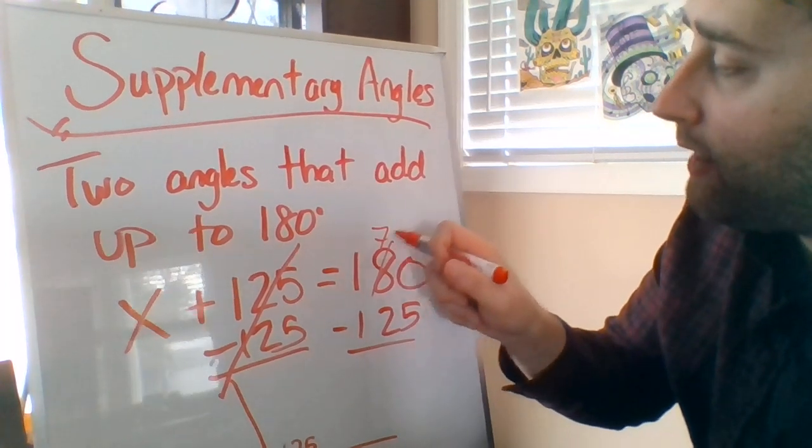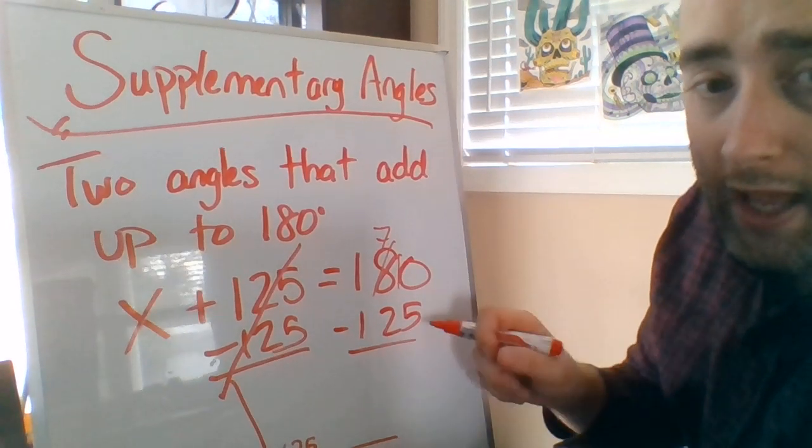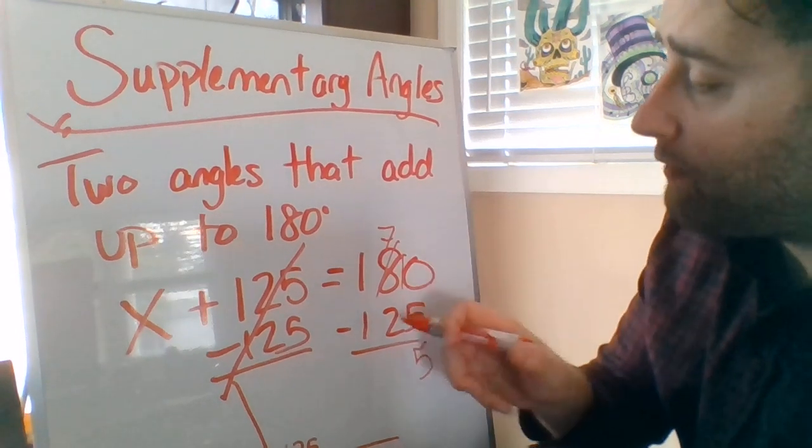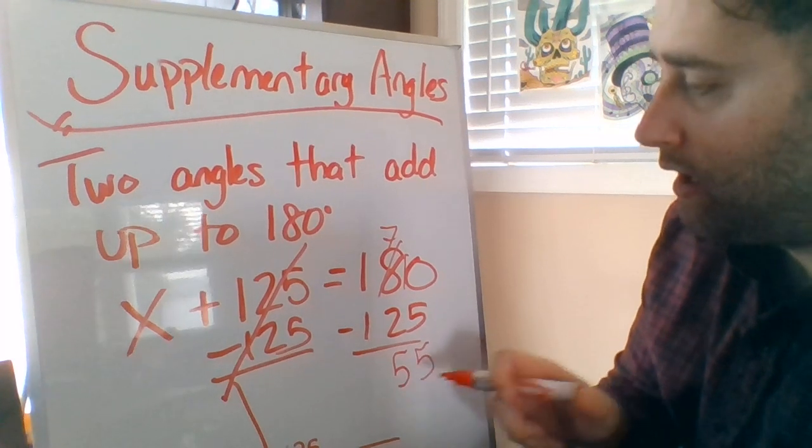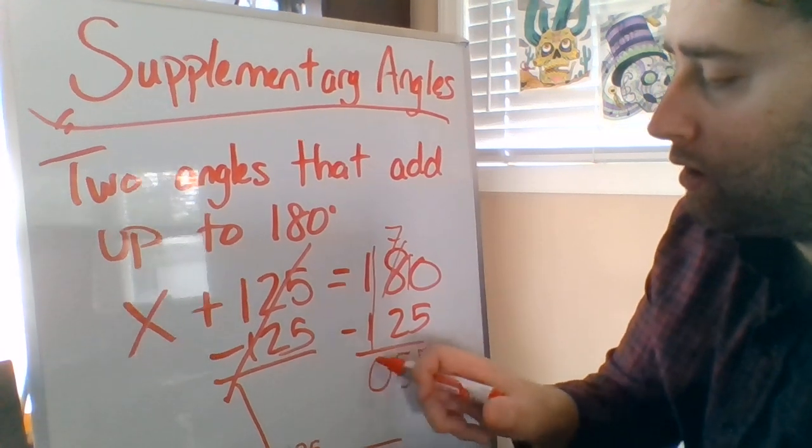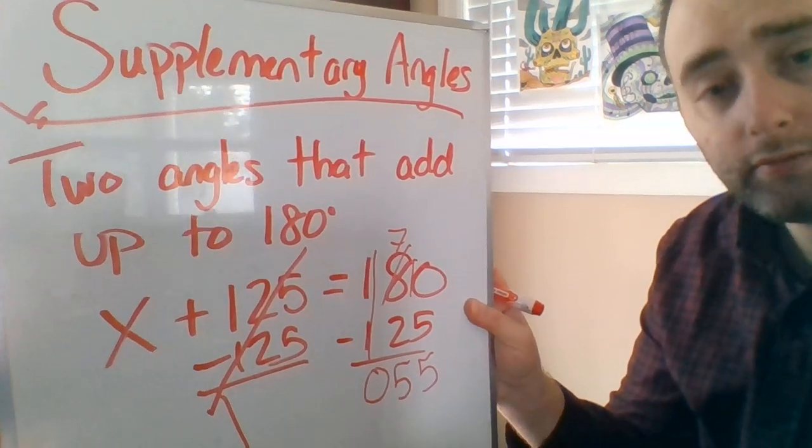I'm going to borrow from the eight, making that a seven, making this a ten. Ten minus five, five. We're good. Seven minus two, five. One minus one, zero. My missing angle, 55.